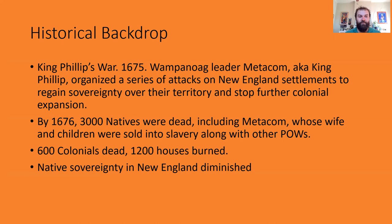By 1676, 3,000 natives were dead, including Metacom, whose wives and children were sold into slavery along with other prisoners of war. On the other end, 600 colonials were dead and 1,200 houses had been burned. These new settlements that were popping up had been burned to the ground. As a result of the war, native sovereignty and power in New England had greatly diminished.